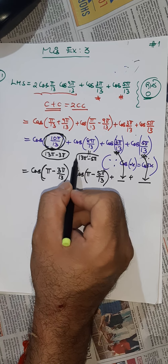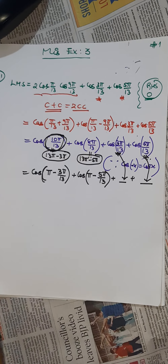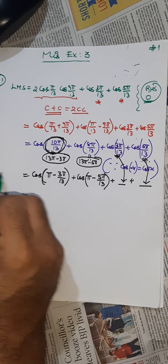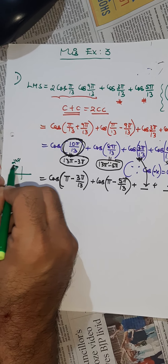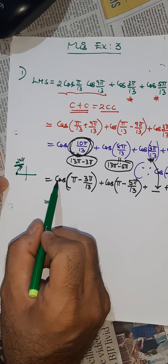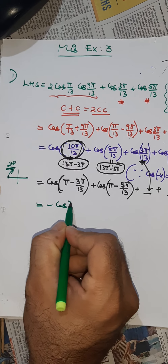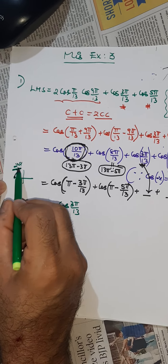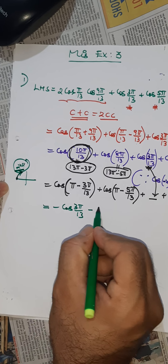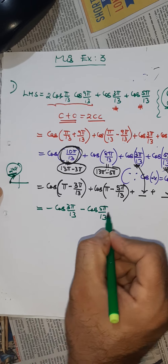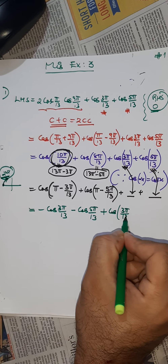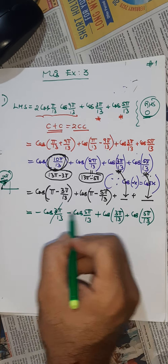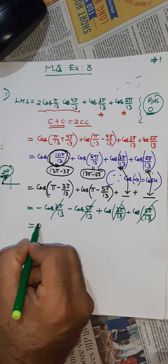Now use the concept of the quadrant: π minus something is the second quadrant. In the second quadrant, cos is negative. So cosine(π − 3π/13) = −cos(3π/13), and cosine(π − 5π/13) = −cos(5π/13), plus cos(3π/13) plus cos(5π/13). So the terms cancel and we get zero, which is the RHS.